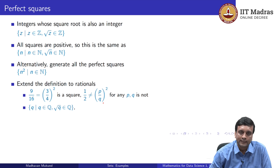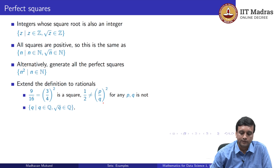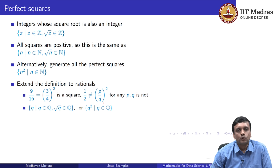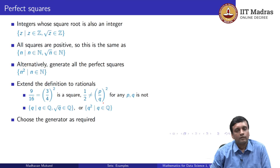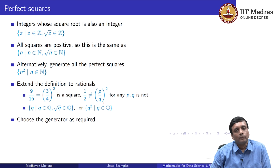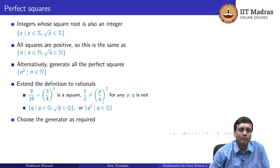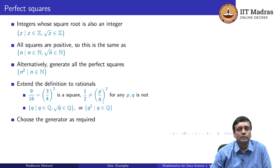So, depending on how you choose the generator, you might generate the same set or you might generate a different set. It is important to specify all the parts of a set comprehension correctly — the generator, the filter, and the transformation — so that there is no ambiguity and so that you get exactly the set you mean to get.